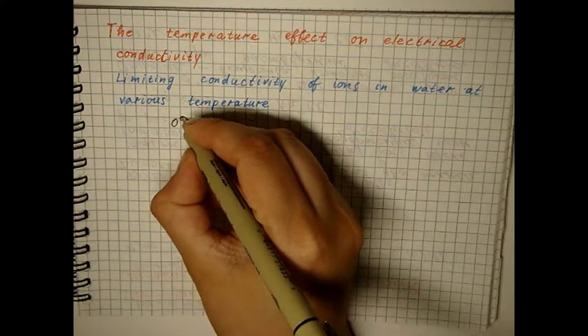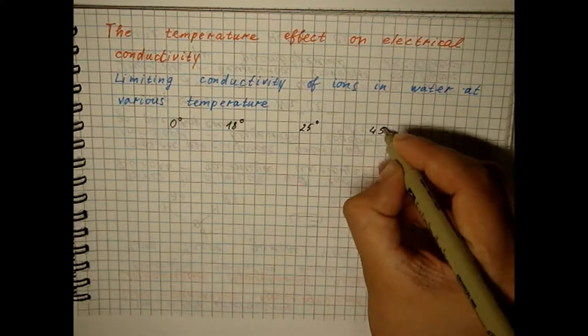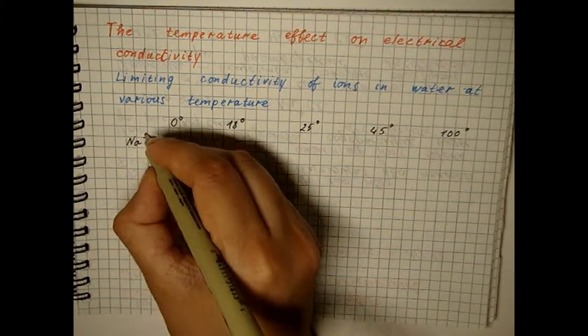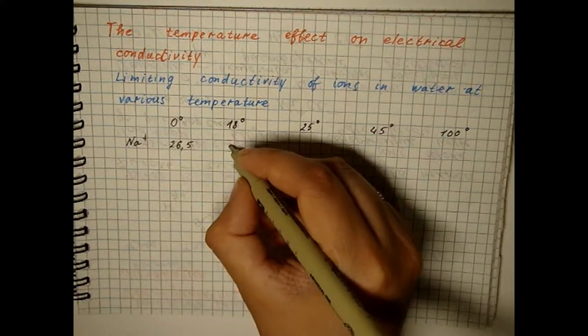An increase in ion mobility with increasing temperature leads to an inverse temperature dependence of the electrical conductivity of electrolyte solutions.